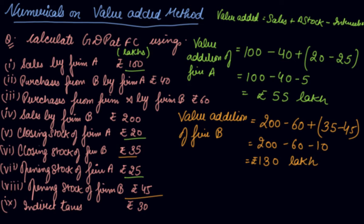I told you that through value added method, we get your GDP at market price. So, add both the value addition of firm A and firm B. You will get the GDP of the economy because only 2 firms are there in the economy. So, Rs. 185 is your GDP at market price.